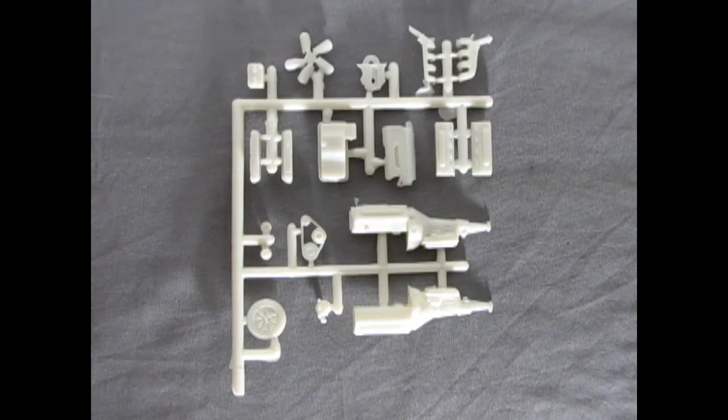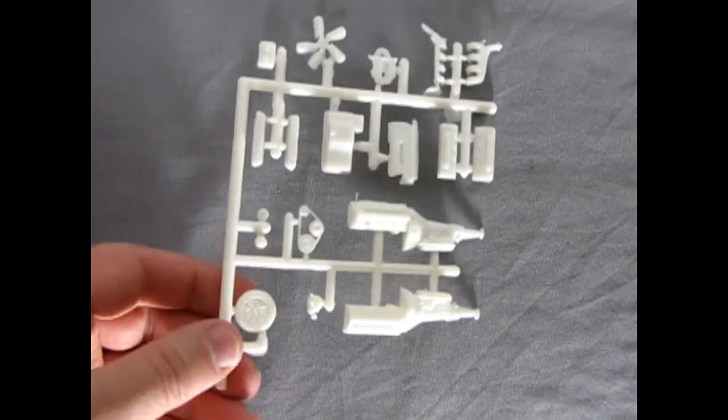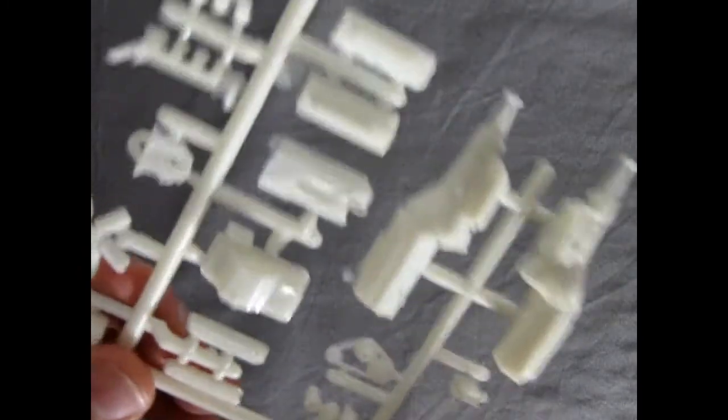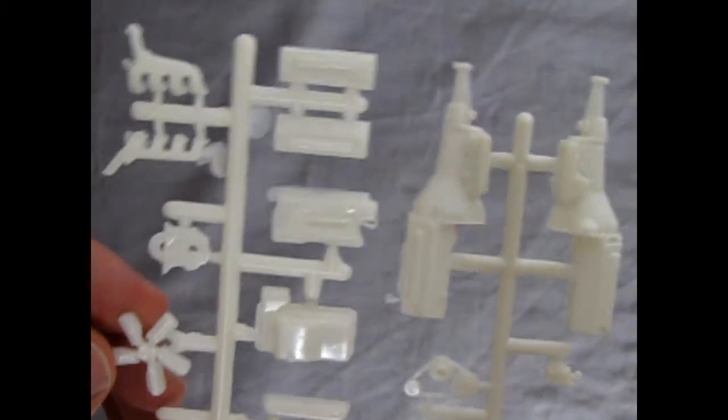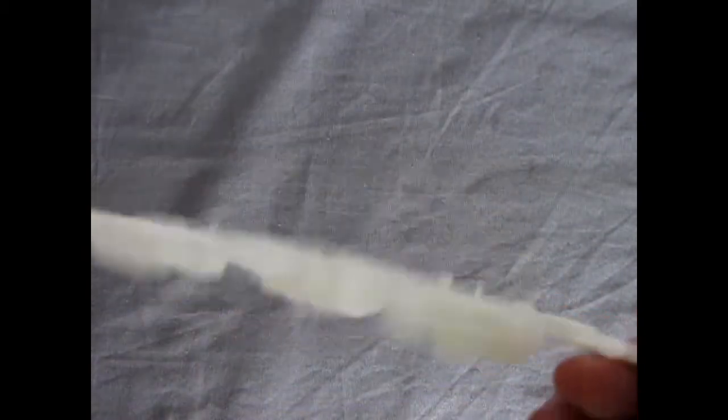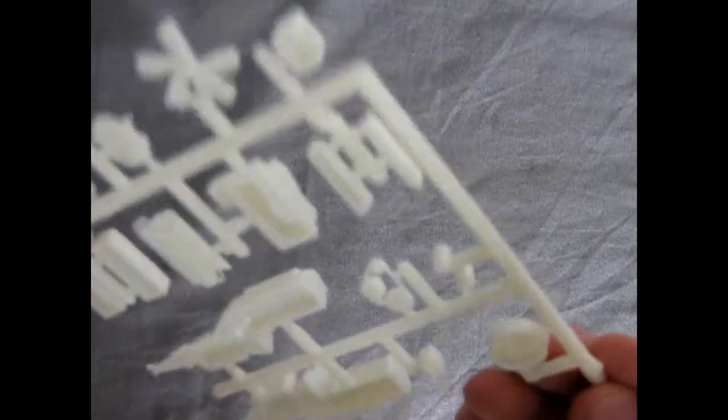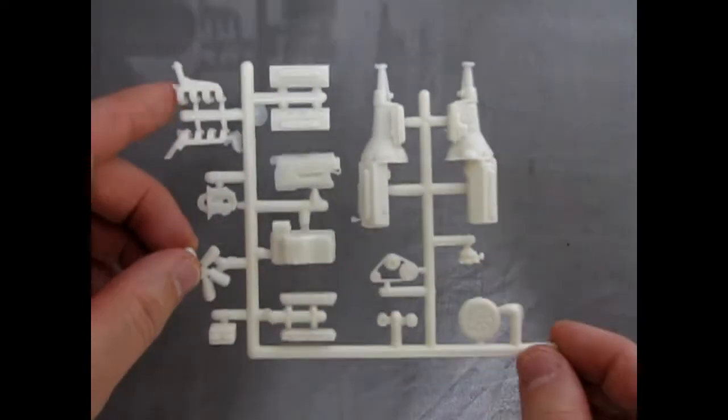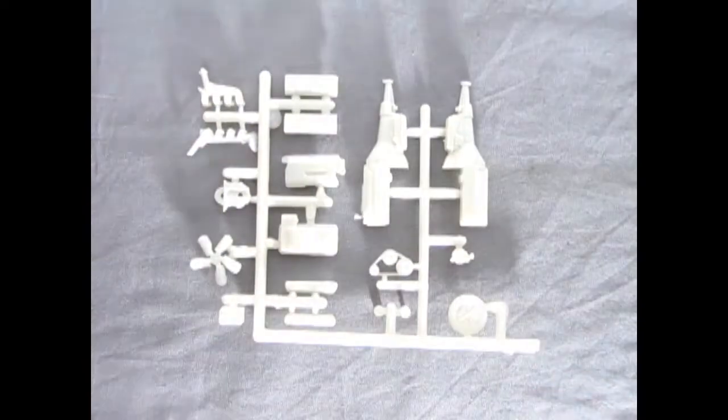And here we have our nice Ford motor which again is the 351 Windsor, and as you can see the detail on it is pretty decent. It's not super detailed, but then again this motor is going to be sitting underneath that hood and you're not going to be able to see all of it. It is quite a nice casting though and should be easy to clean up of all the flash and assemble and have a decent looking thing underneath your model.